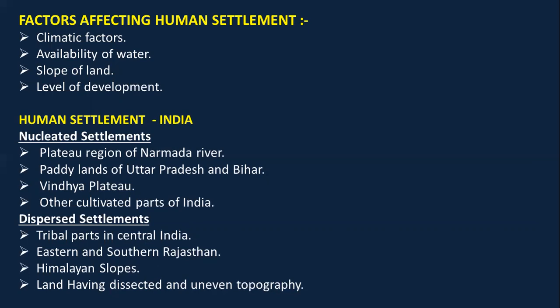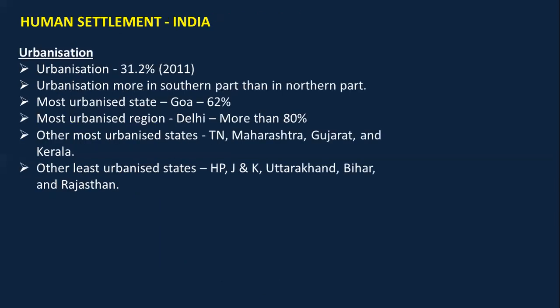Dispersed settlements are found in the tribal parts of central India, in eastern and southern Rajasthan where there are extreme climatic conditions, on Himalayan slopes where the land is uneven, and in areas with dissected and uneven topography.